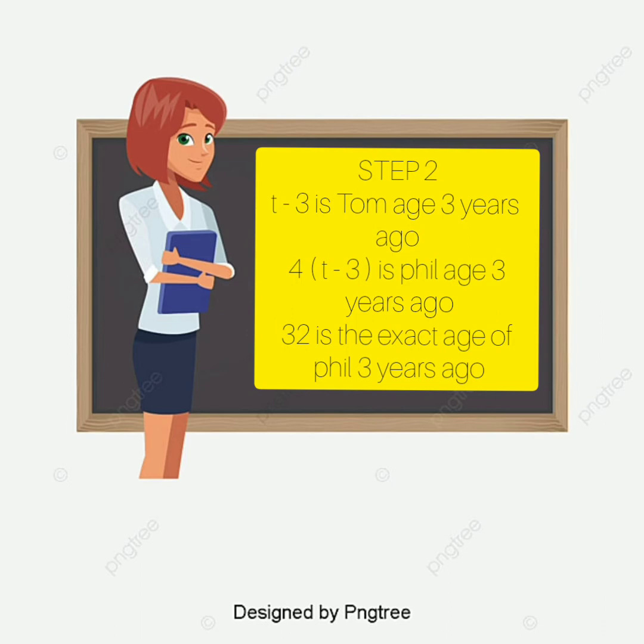So: t minus 3 is Tom's age three years ago. Four times the quantity (t minus 3) is Phil's age three years ago. And 32 is the exact age of Phil three years ago, since Phil is 35 now and 35 minus 3 equals 32.